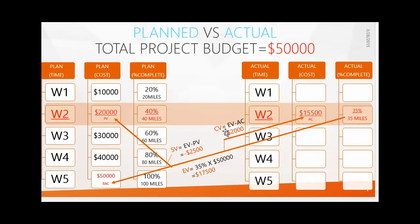A positive CV means you are doing well in terms of cost. Now let's see how much the project varied in terms of schedule. What you planned was twenty thousand dollars — meaning twenty thousand dollars should have been spent and forty miles finished by week two. But only 35 miles were completed. Taking the difference between EV and PV gives minus two thousand five hundred dollars — that is the Schedule Variance.